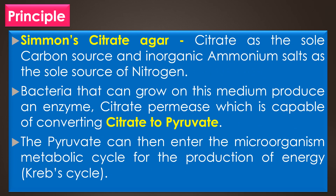The Simmons citrate agar is used for the citrate utilization test. The medium contains citrate as the sole carbon source and inorganic ammonium salts as the sole source of nitrogen. Bacteria that can grow on the Simmons citrate agar medium produce an enzyme called citrate permease, which is capable of converting citrate to pyruvate. The pyruvate can then enter the microorganism's metabolic cycle for the production of energy. Growth is indicative of utilization of citrate, an intermediate metabolite in the Krebs cycle.